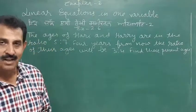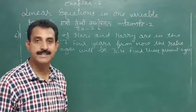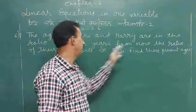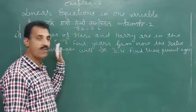A session which is continuing on the exercise 2.6, question number six. The ages of Hari and Harry are in the ratio five is to seven.